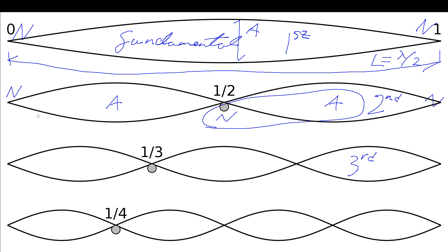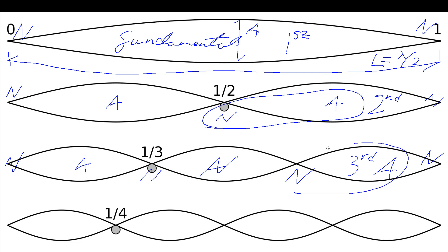Each time we go to a higher harmonic, we add another node/anti-node pair. In the second harmonic we have: node, anti-node, node, anti-node, node. In the third harmonic we have: node, anti-node, node, anti-node, node, anti-node, node — another node/anti-node pair added. The original node, anti-node, node from the first harmonic is still present at the core.